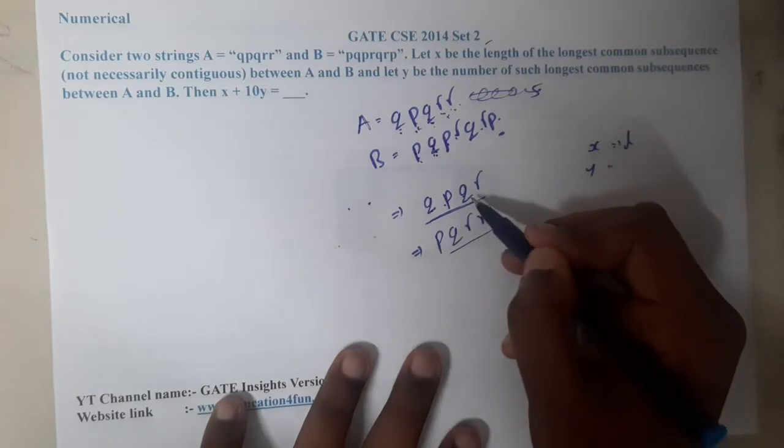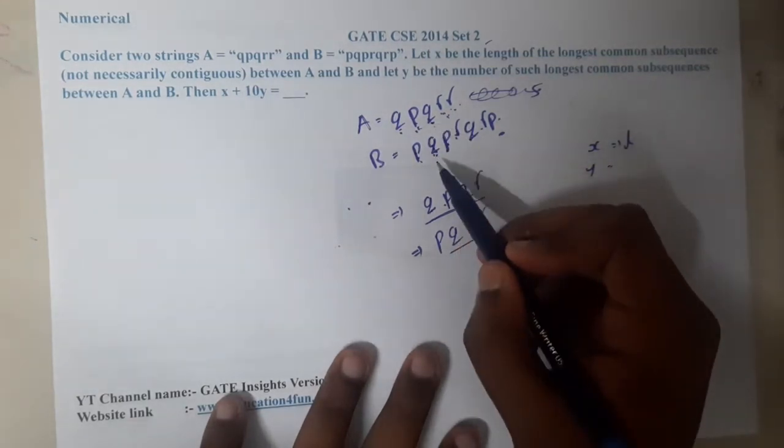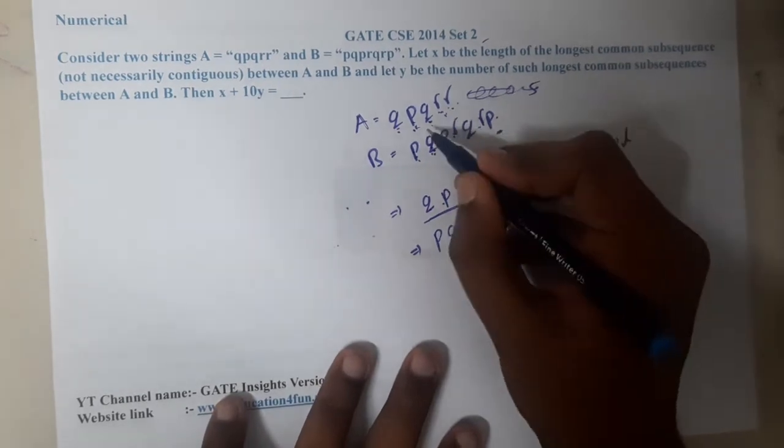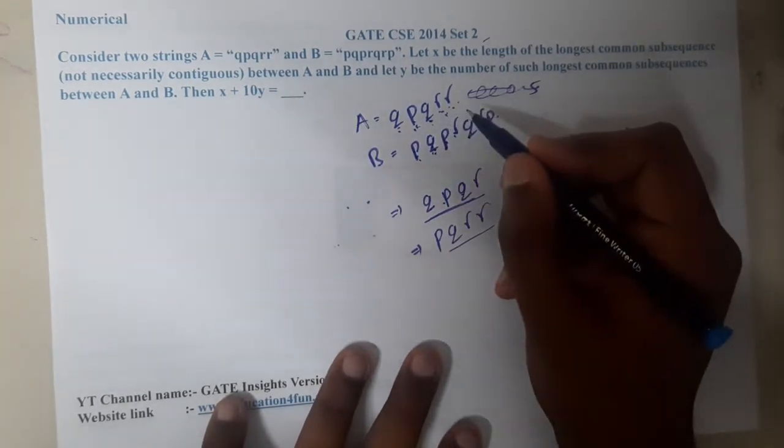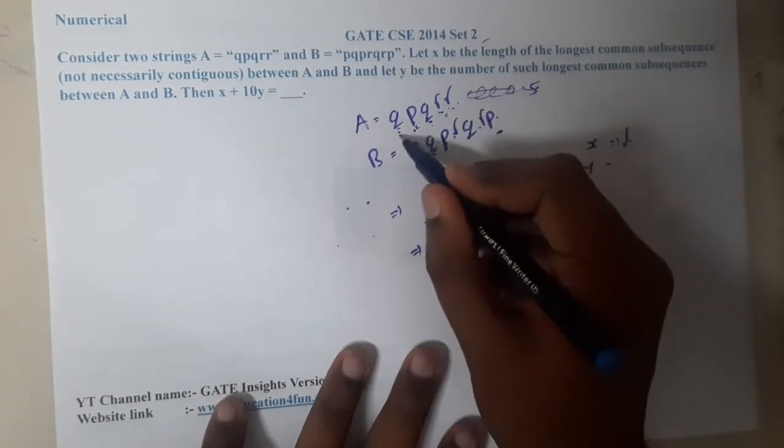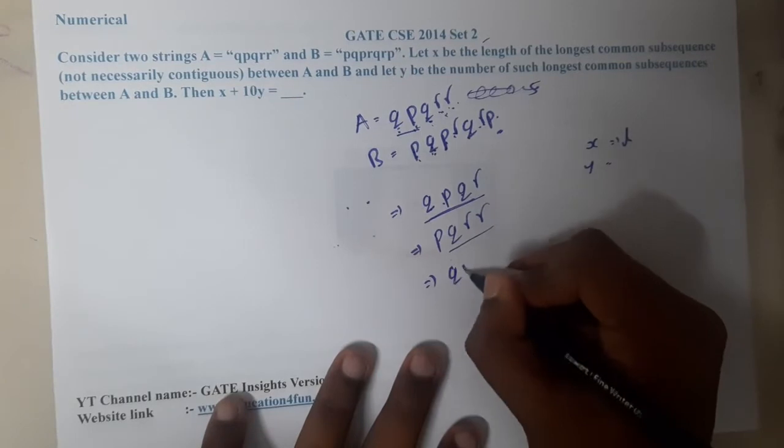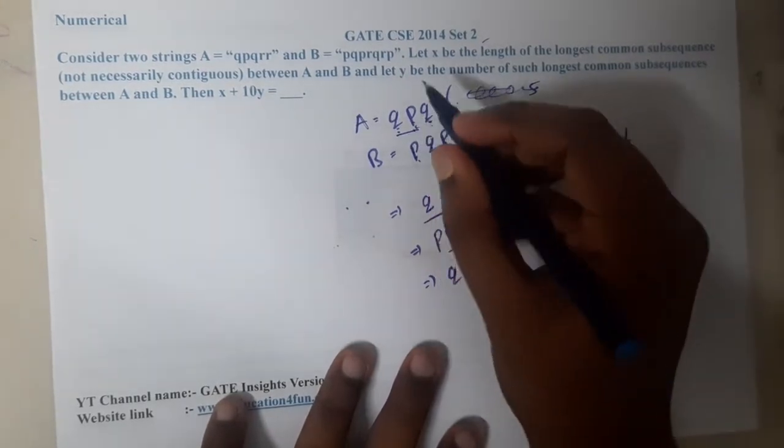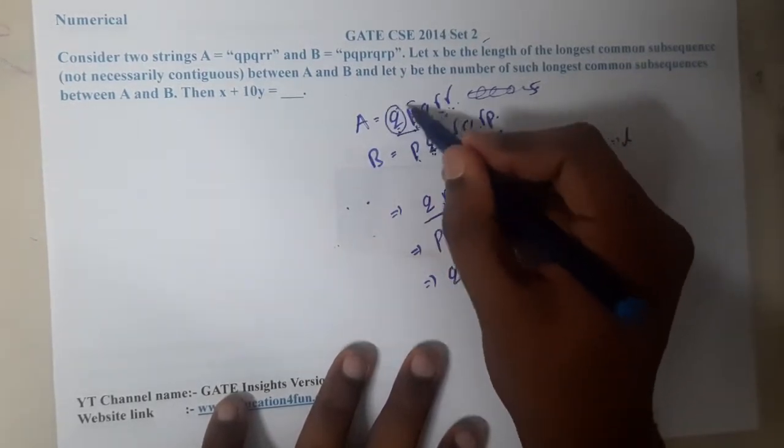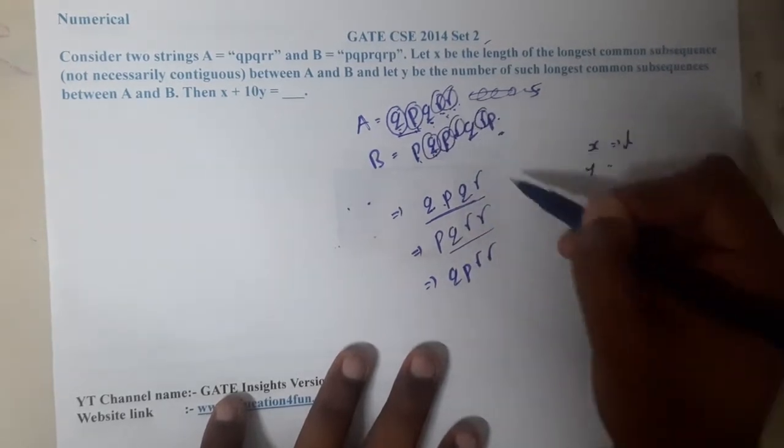One more sequence will be q p r r. If you observe, q p r r is also there. So in total we are having three subsequences, each of their length is four.